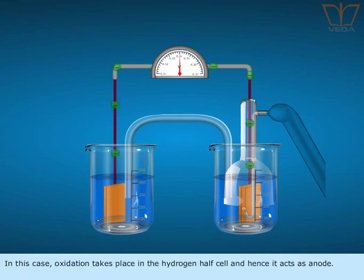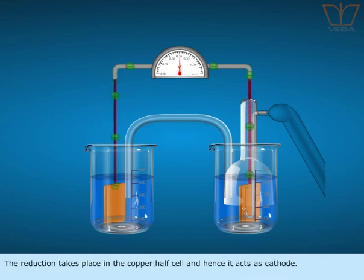In this case, oxidation takes place in the hydrogen half cell and hence it acts as anode. The reduction takes place in the copper half cell and hence it acts as cathode.